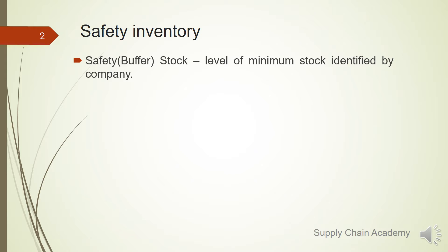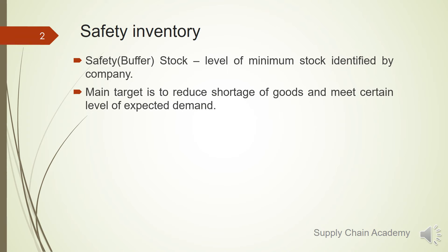Safety inventory, or buffer stock, is a level of minimum stock identified by a company for all-time keeping. The main target is to reduce shortage of goods and meet a certain expected level of demand — to be out of shortage in most cases.